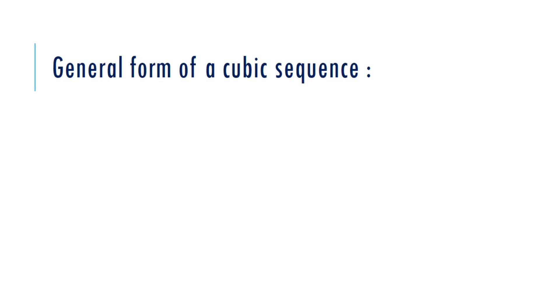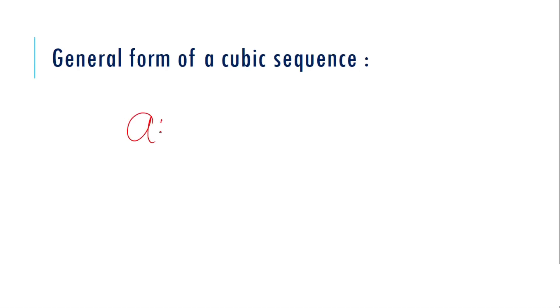Now the general form of a cubic sequence can be given as an³ + bn² + cn + d. Now your aim is to find what is a, b, c, and d. Once you find a, b, c, and d, you can just bring them together in the form an³ plus bn² plus cn plus d.